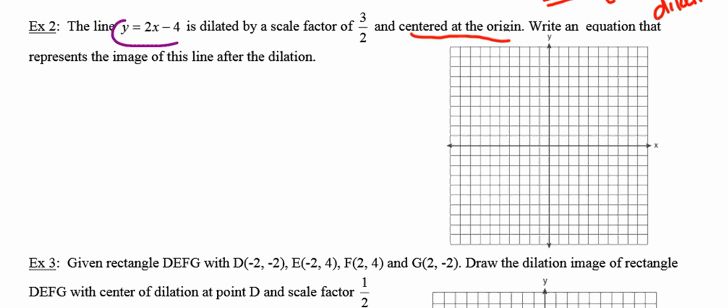I'm going to start by graphing that line whose equation is y = 2x - 4. You can either build a table of values, or I'm going to use the slope and the y-intercept. The y-intercept here is at the point (0, -4). And the slope is 2.